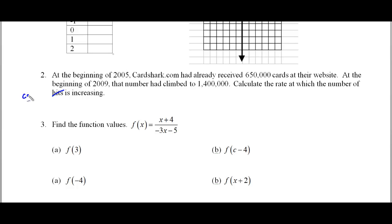The number of cards. Cards are increasing. So, sorry about that. Well, let's actually take a look here. So we have an actual ordered pair in 2005. That's X time, the independent variable. CardShark received six hundred fifty thousand cards. There's our Y variable, our dependent variable. And then here we have two thousand nine where we have one million four hundred thousand cards.